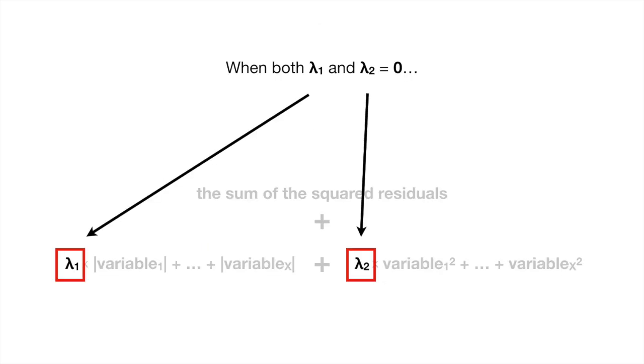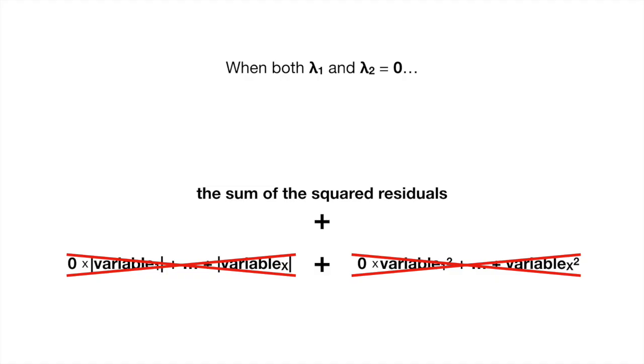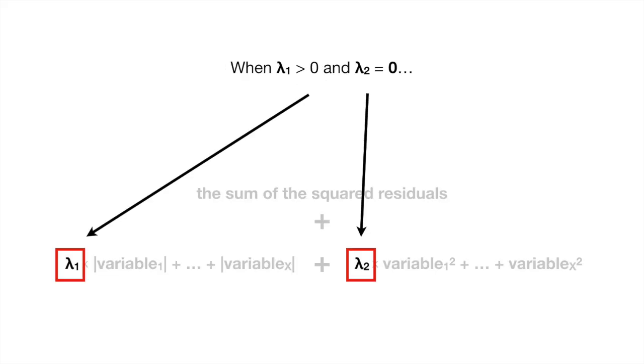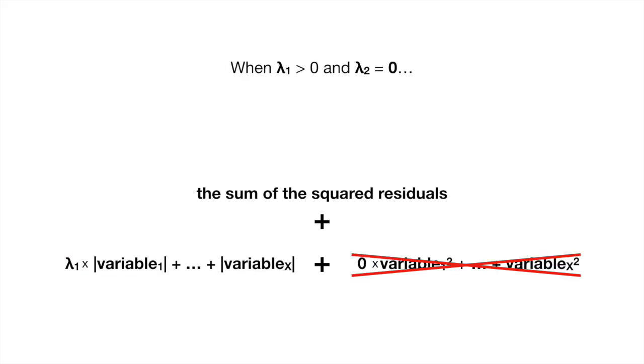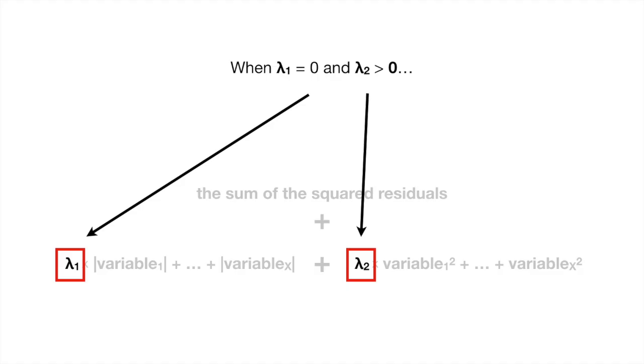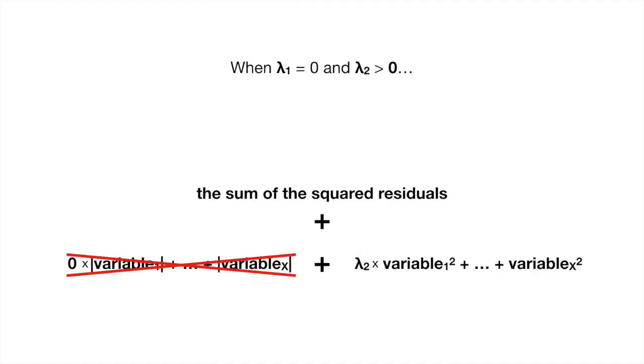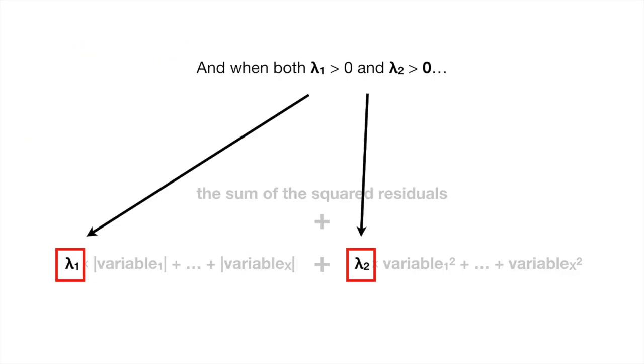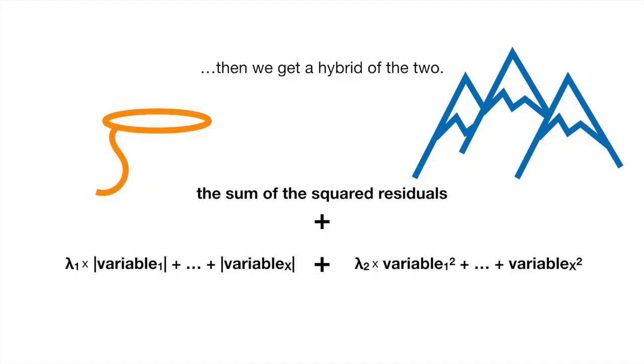When both Lambda sub 1 and Lambda sub 2 equal 0, then we get the original least squares parameter estimates. When Lambda sub 1 is greater than 0 and Lambda sub 2 equals 0, then we get Lasso Regression. When Lambda sub 1 equals 0 and Lambda sub 2 is greater than 0, then we get Ridge Regression. And when both Lambda sub 1 is greater than 0 and Lambda sub 2 is greater than 0, then we get a hybrid of the two.